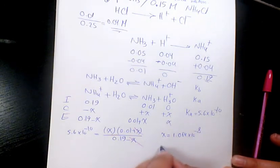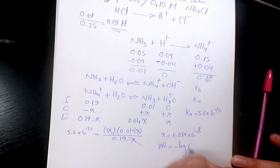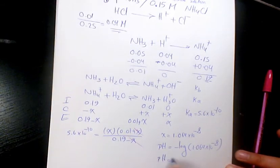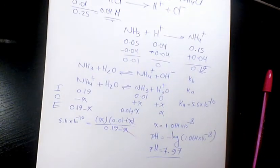The pH is negative log of 1.064 times 10 to the -8, which equals 7.97. That's the pH of this buffered solution after we add the acid.